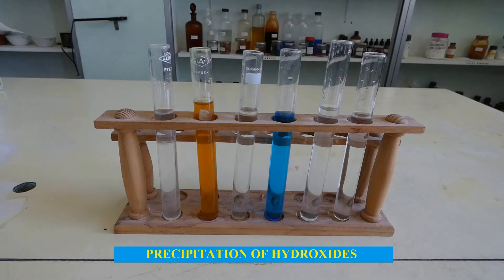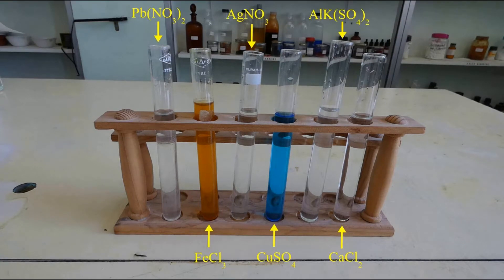We are going to do the precipitation of some hydroxides. In six test tubes dissolve lead nitrate, iron chloride, silver nitrate, copper sulfate, aluminum and potassium sulfate, and calcium chloride.